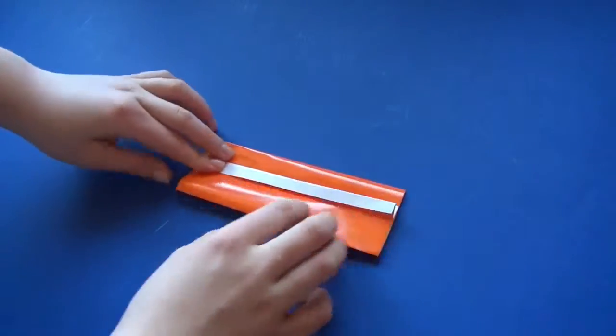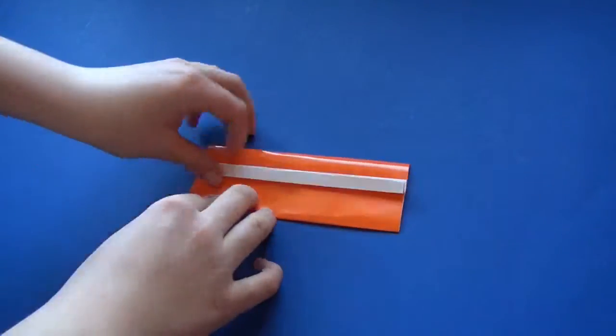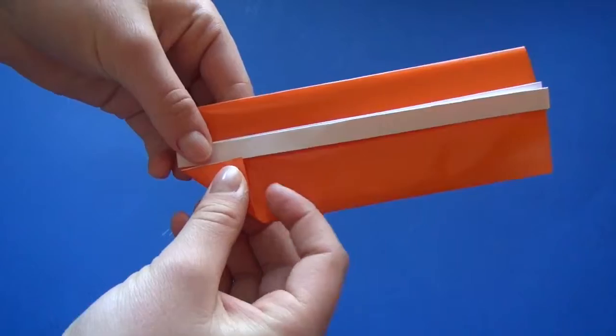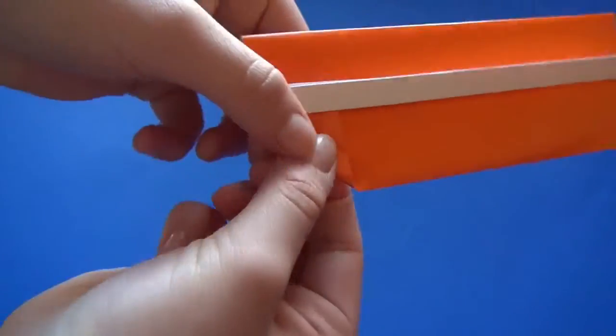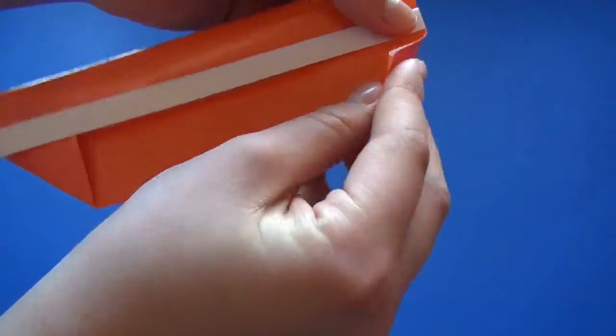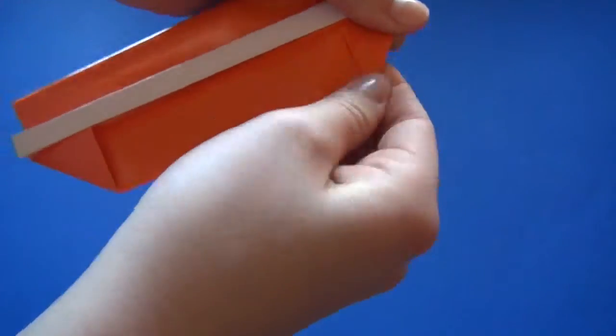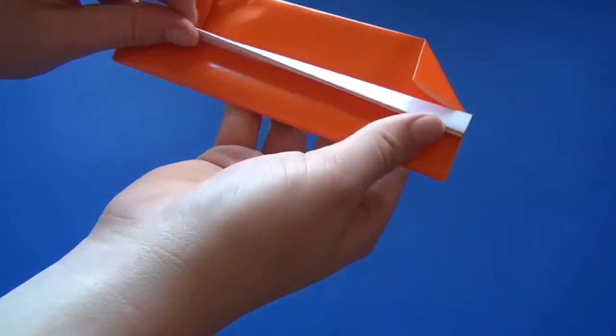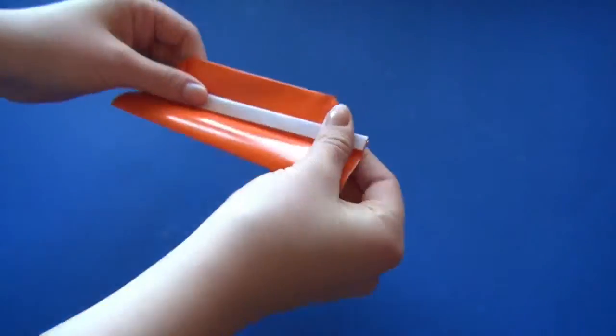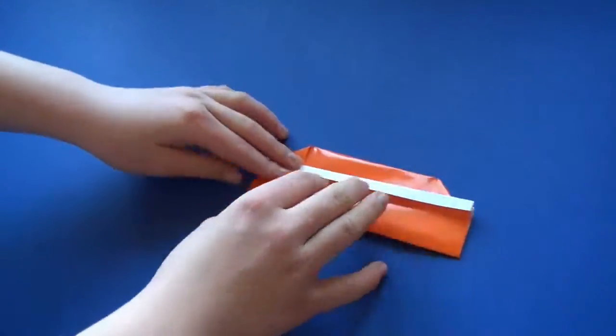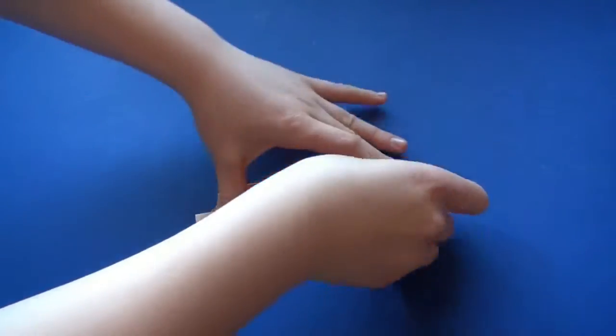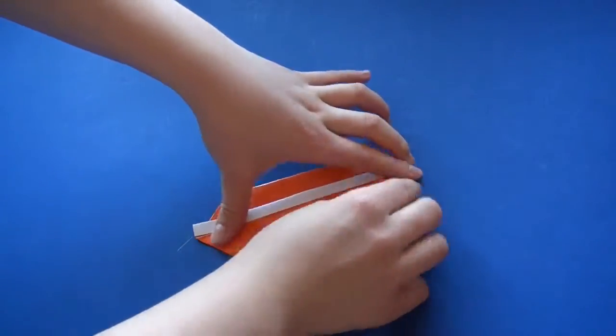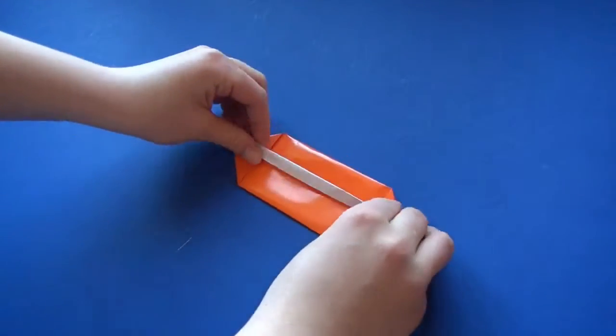Take this flap and bring it up, take your corners and crease them up to this line on both sides. Flip it over, take the flap up and do the same thing on this side. Now take one of the flaps and open it like this.